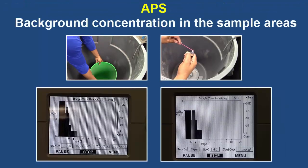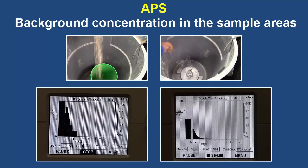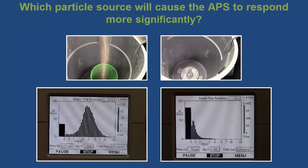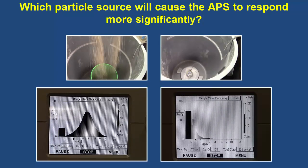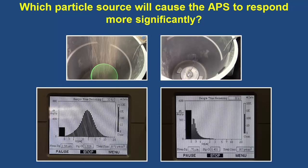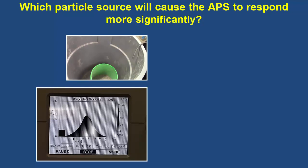Next is the aerodynamic particle sizer, or APS, which displays the size distribution of particles in a volume of air. Here are the background concentrations. The cat litter has a wide range of particle sizes, many of which are larger particles above one micrometer in diameter. On the other hand, the incense stick has a small range of particle sizes, and most of them are below one micrometer in diameter. In other words, the APS is not useful for detecting the size distribution of smaller or nanoscale particles.